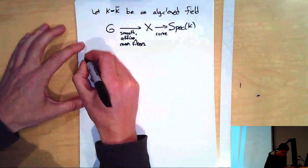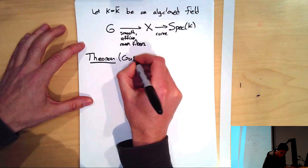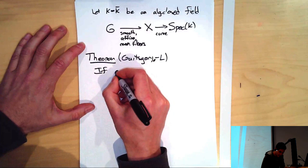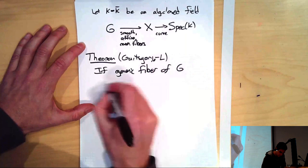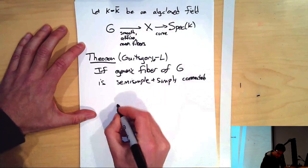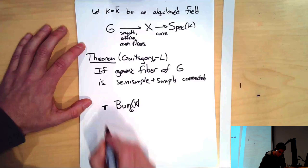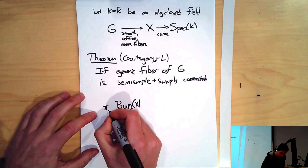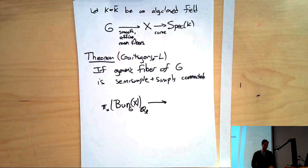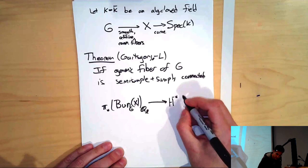Last time I stated a theorem due to joint work with Dennis Gaitsgory. So there's a hypothesis: if the generic fiber of G is semi-simple and simply connected, then we can say something about the homotopy type of Bun G of X. Specifically, I'm going to choose some prime number L which is invertible in K, and then we can talk about the Q_L homotopy groups of Bun G of X. In the previous lecture, I described how to make a map from this into the hypercohomology of some complex of sheaves that lives on X.